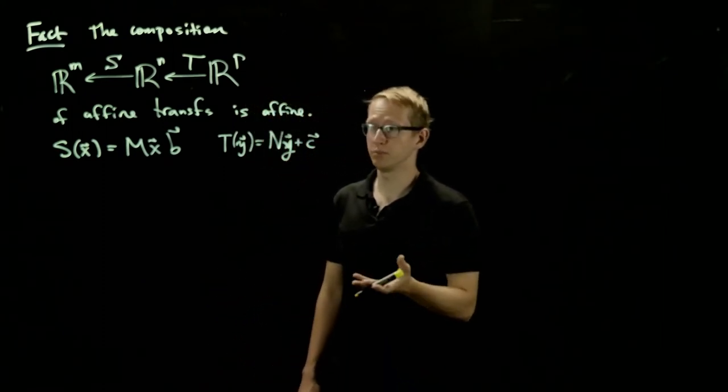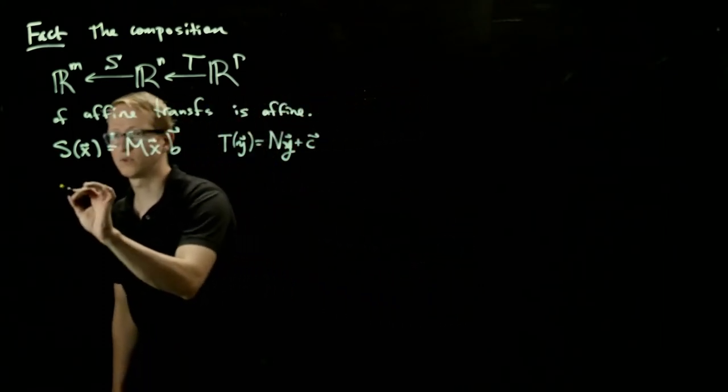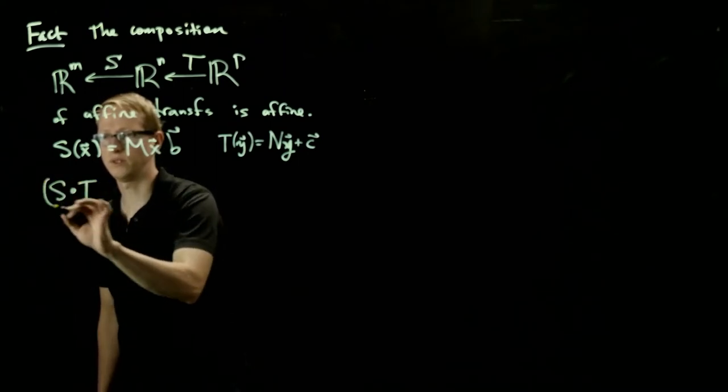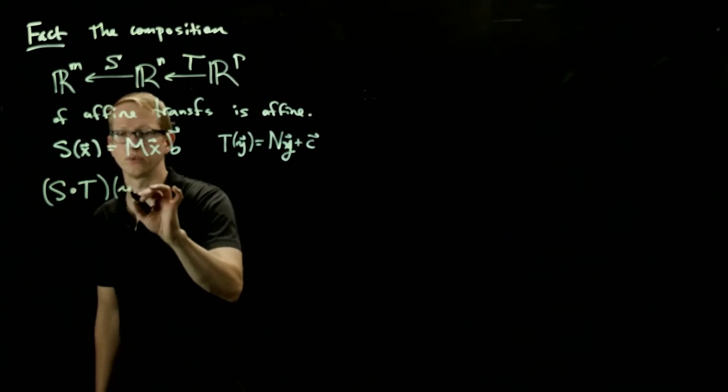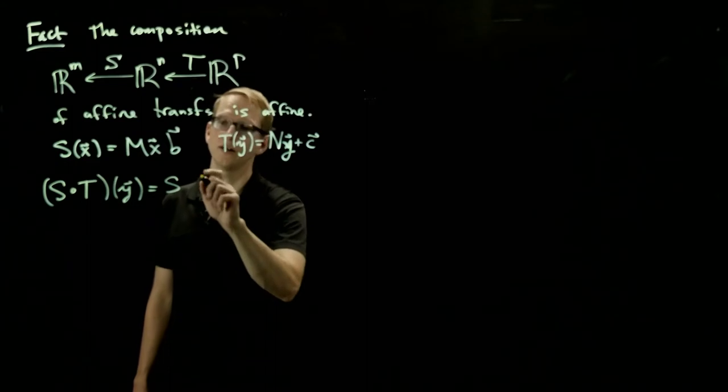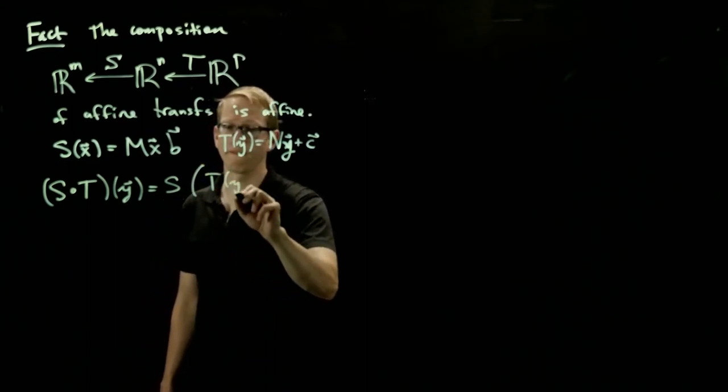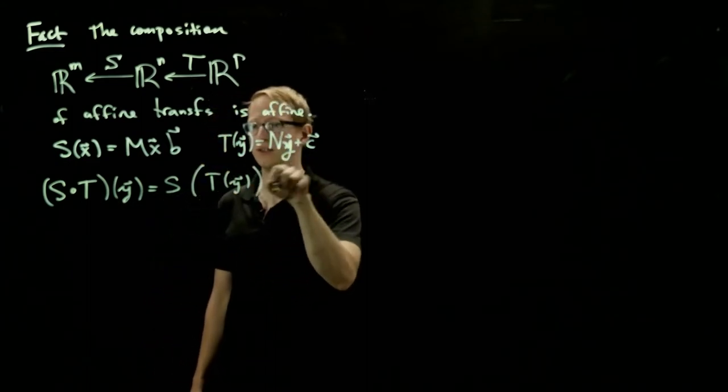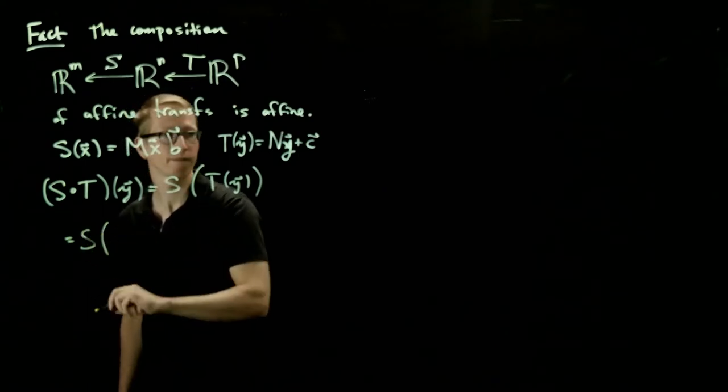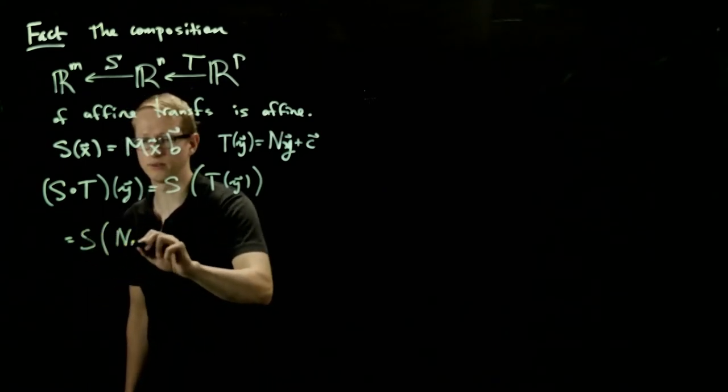And let's just be careful about composing these. So if we take the composition, S composed with T, and we apply a vector y, then this by definition is S applied to T of y, and we know that T is of this form. So we get Ny plus C.